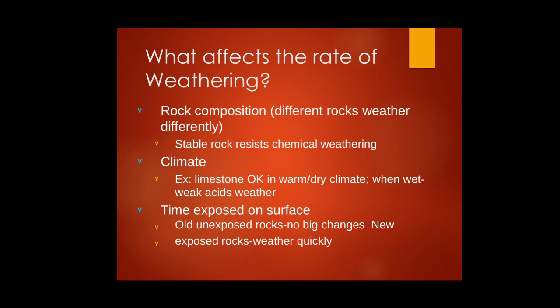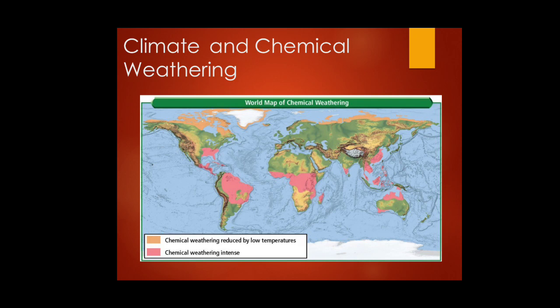There is a world map image showing climate and chemical weathering effects. The pale yellow color represents reduced chemical weathering due to low temperatures, while the pink color represents intense chemical weathering.